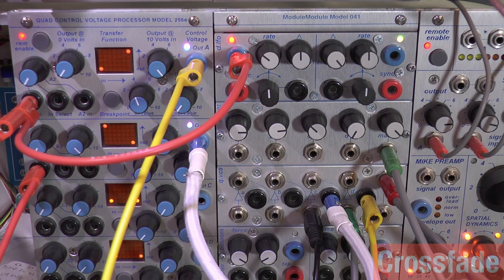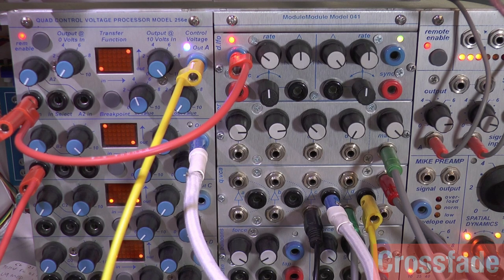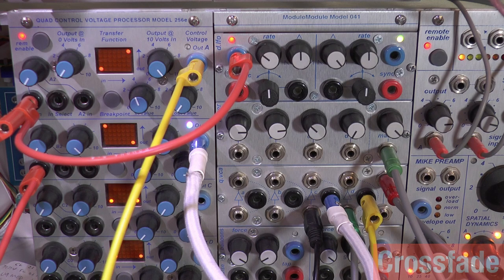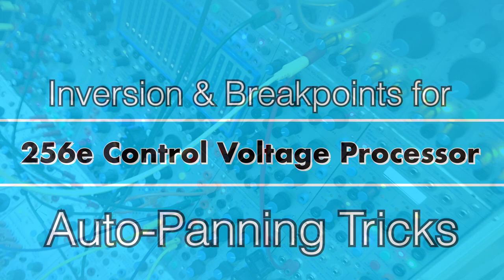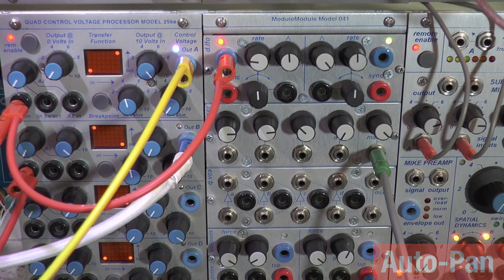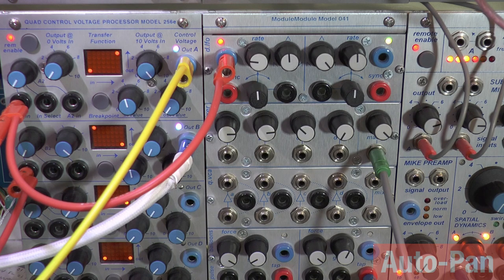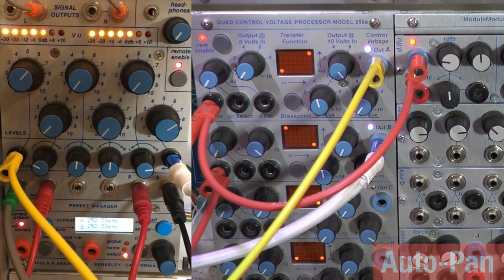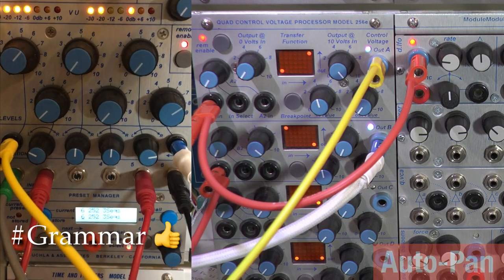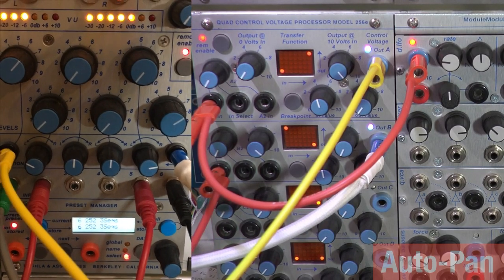This can also be used for panning on the 206e or any other control voltage-able pannable mixer. So let's take a quick listen to that. This is using inversion as a fun trick to do some auto-panning maneuvers here. I can only show this on the iPhone unfortunately because I just don't have - it's too impossible to set up at the moment.